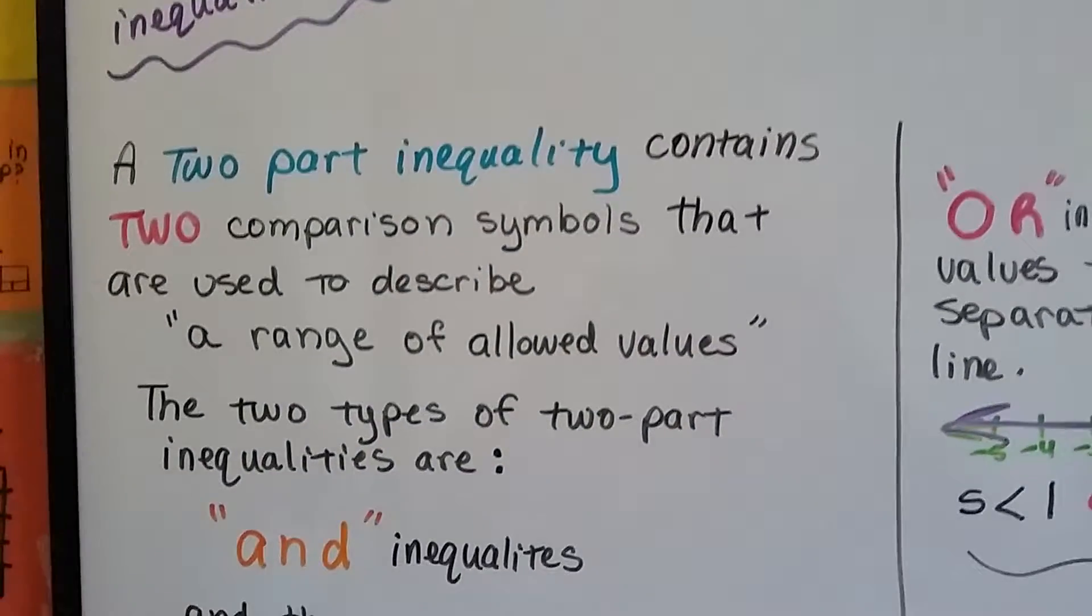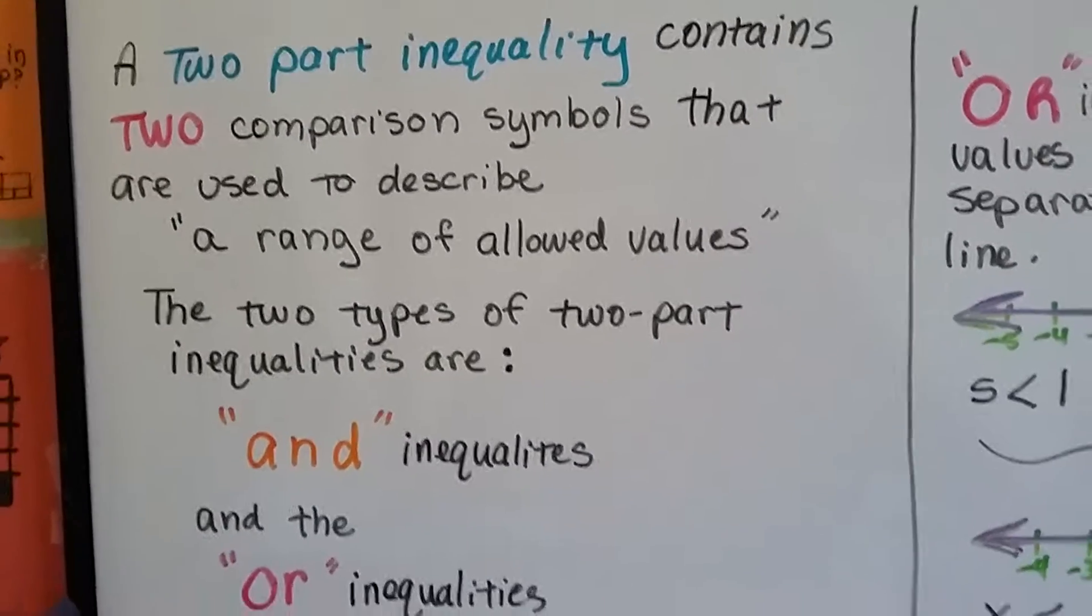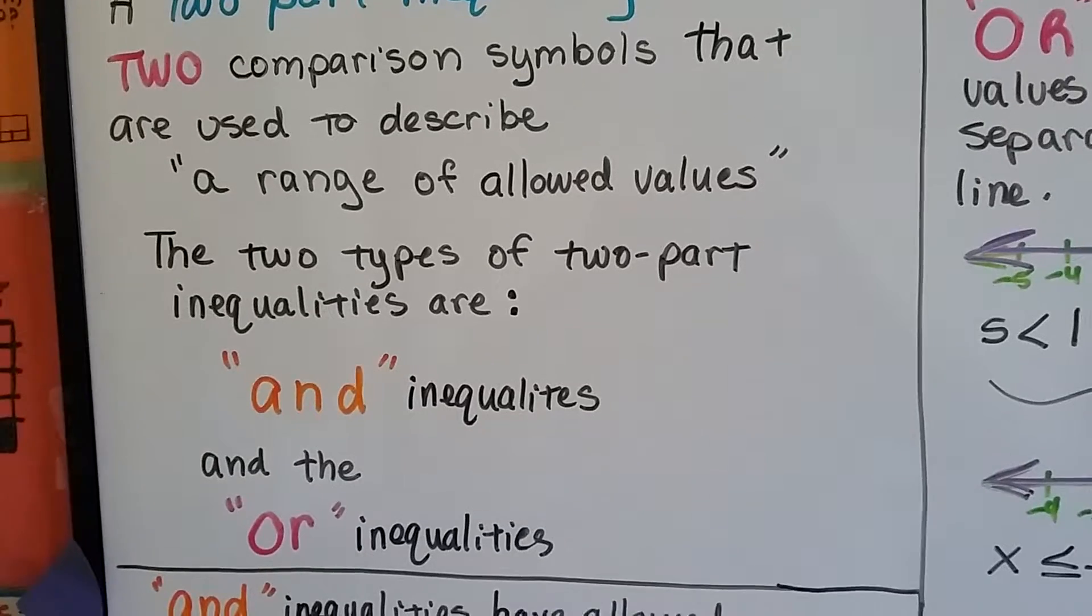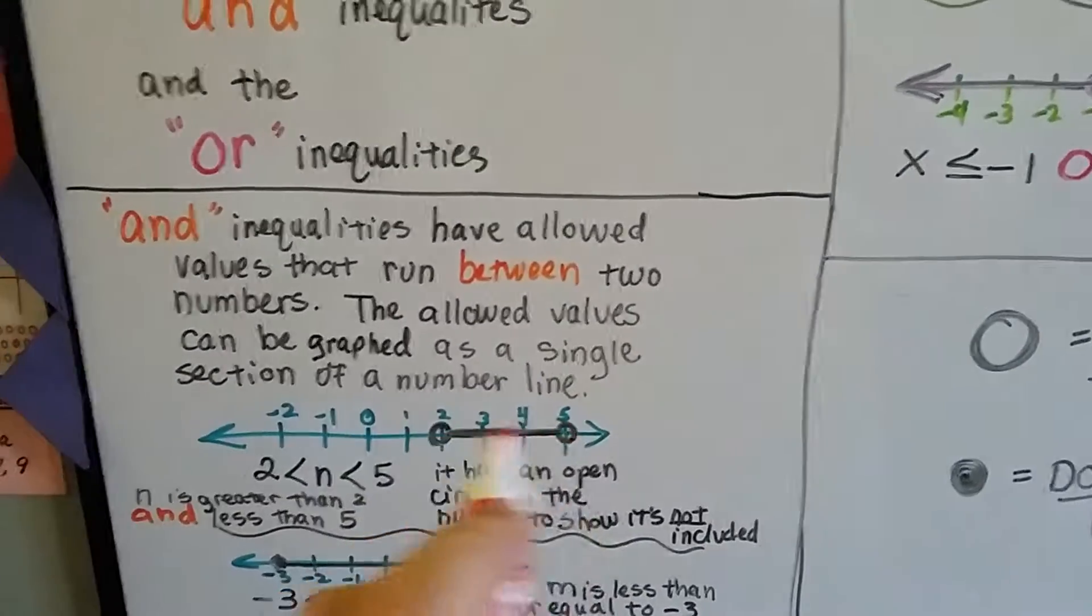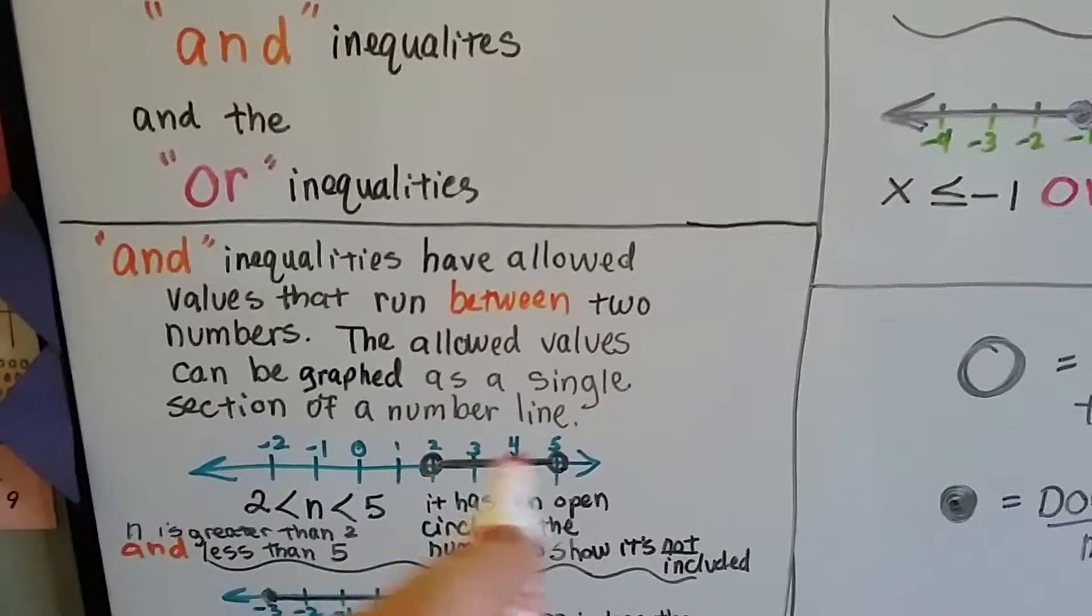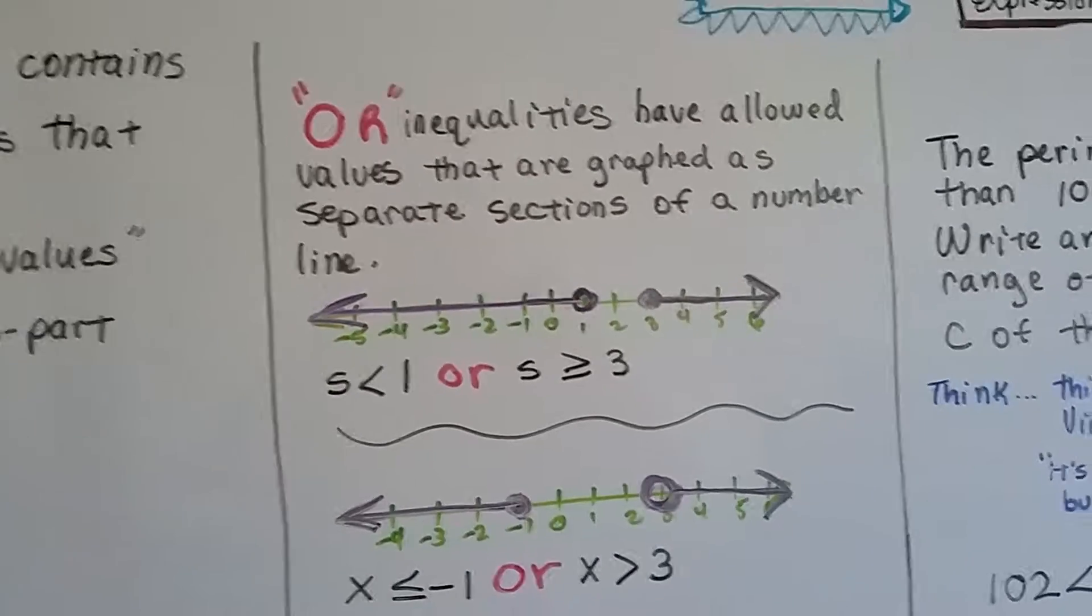They contain two comparison symbols that are used to describe a range of allowed values. And we've discussed that there's AND inequalities and OR inequalities. The AND inequalities can be graphed on a number line with one line, and the OR inequalities are in two parts.